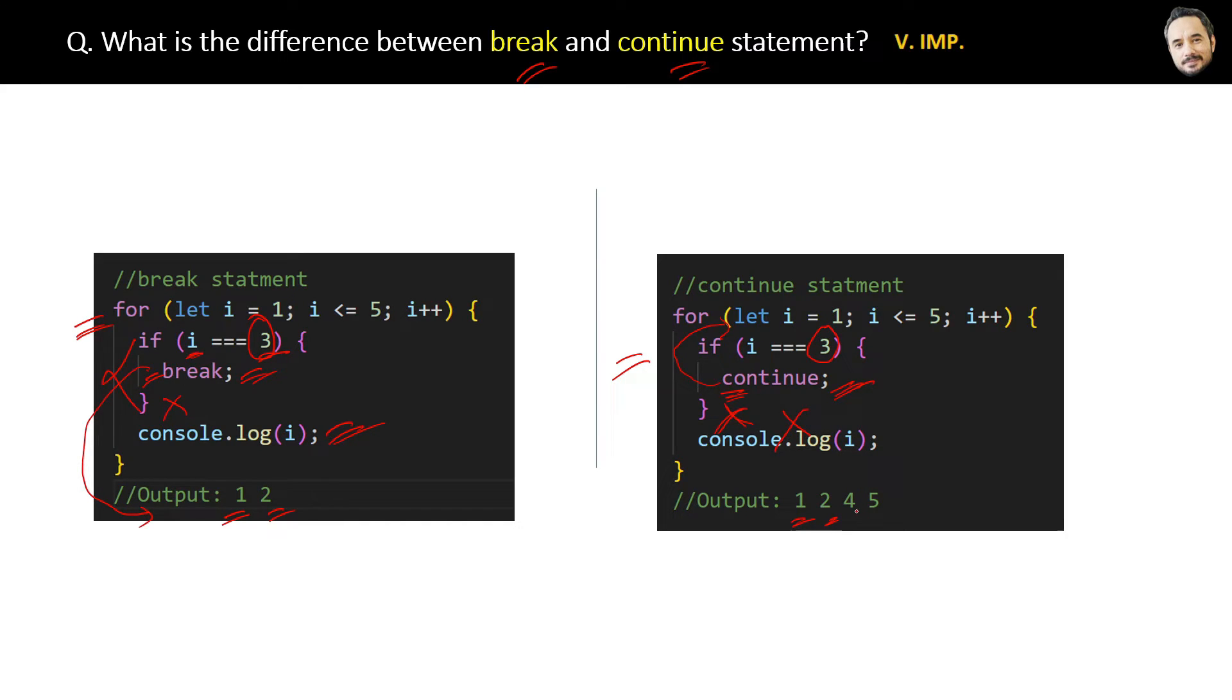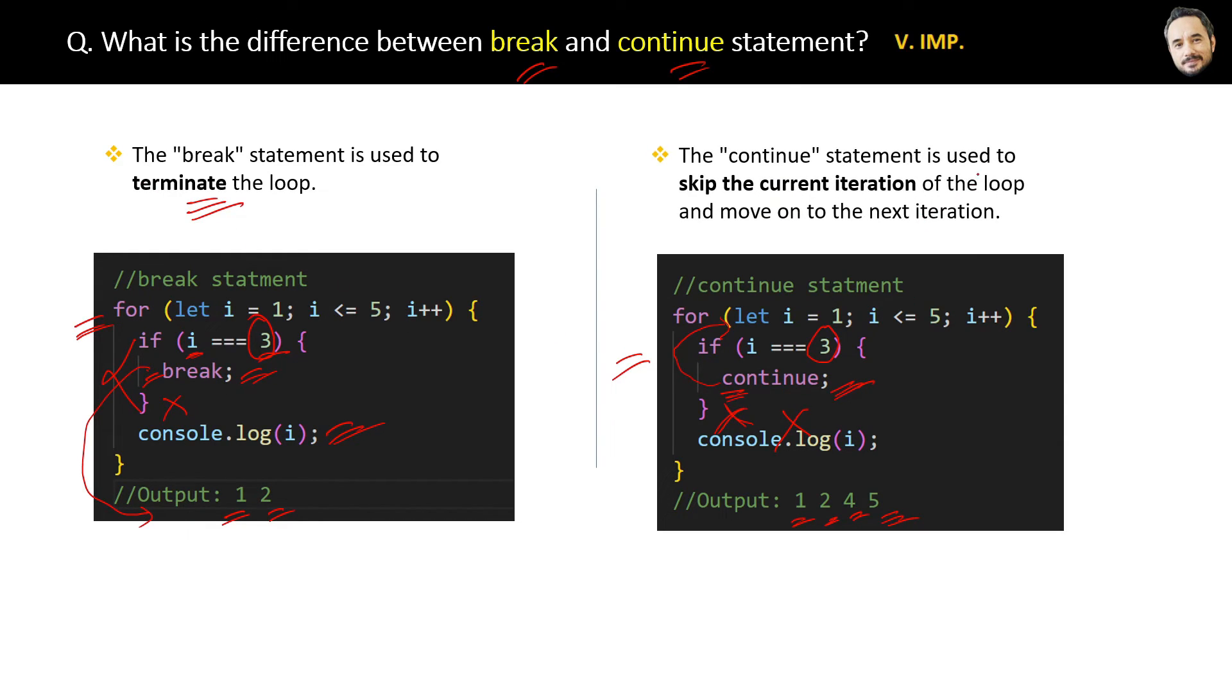The final difference between them is: the break statement is used to terminate the loop, whereas the continue statement is used to skip the current iteration of the loop and move on to the next iteration. Got it?